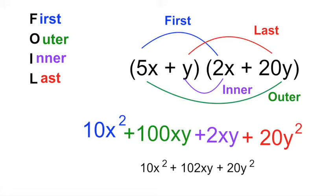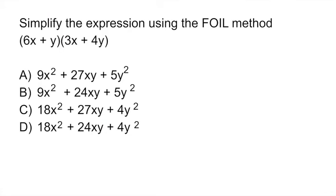Then you simplify this expression further by adding common terms. That would give you 10x² + 102xy, adding the two numbers in the middle, plus 20y². Now that we know the FOIL method, let's go back to our equation.